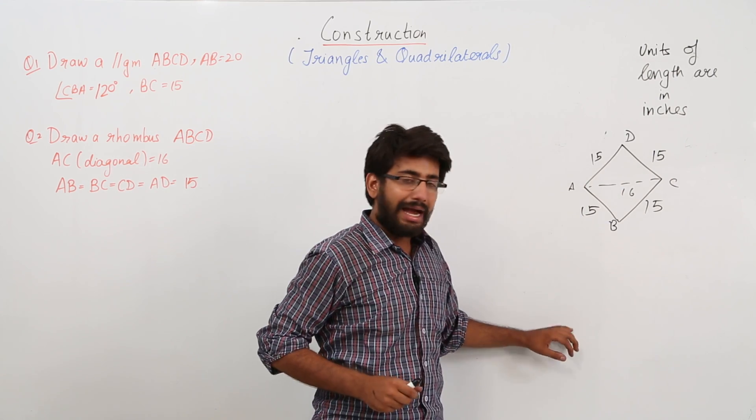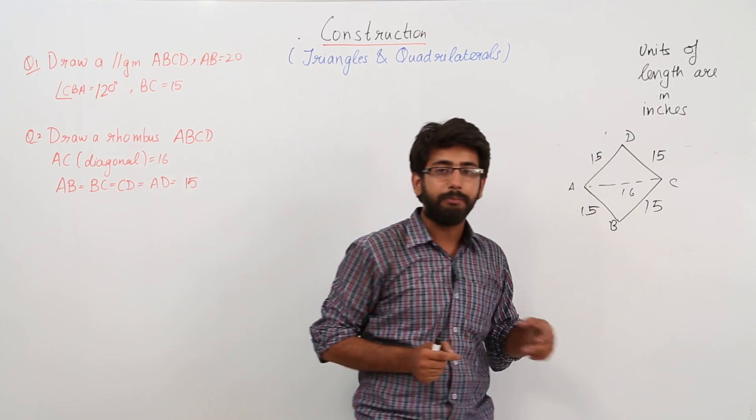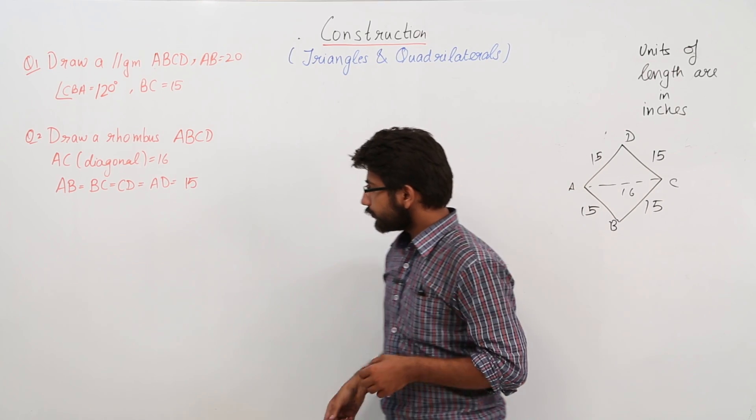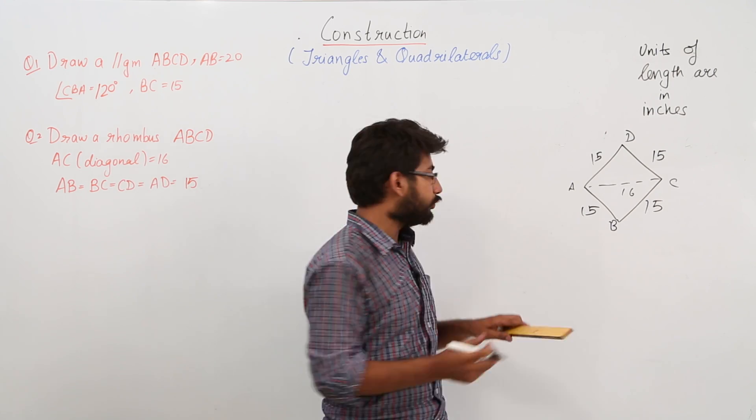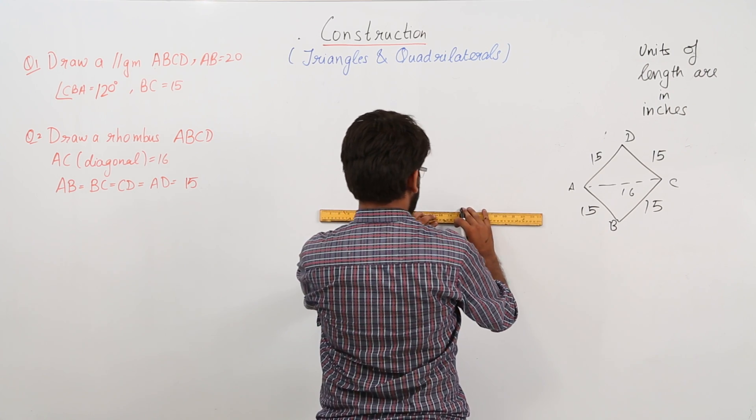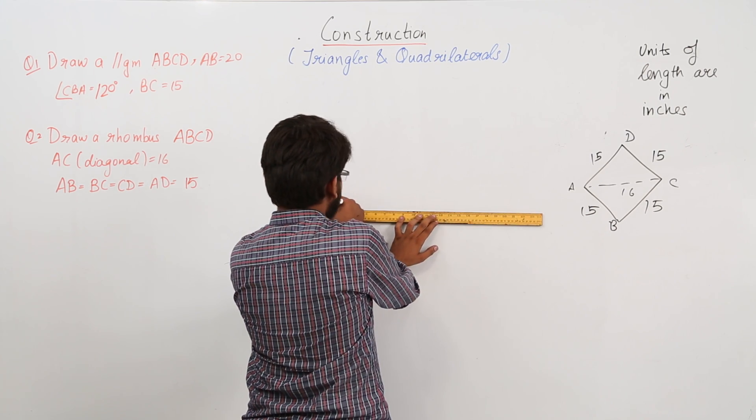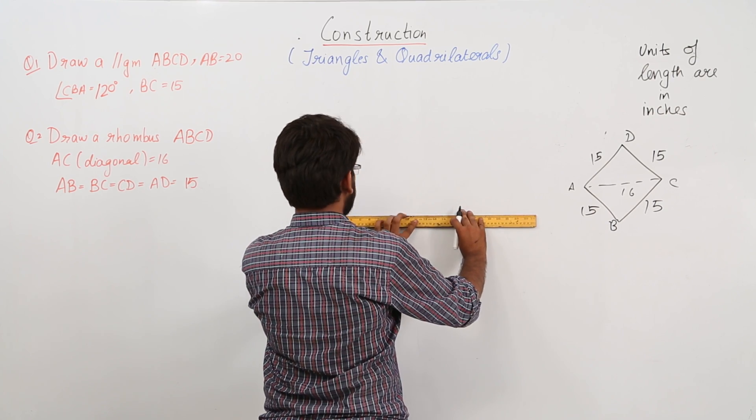So first let us draw this AC equal to 16. Now draw AC equal to 16. We will draw it with the dotted lines because it is a diagonal.